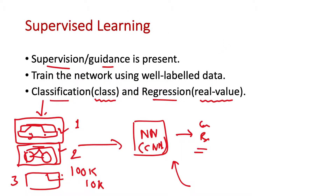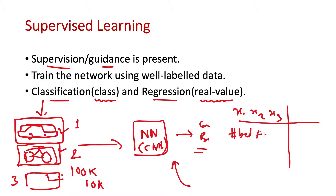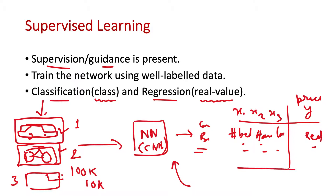In regression, we may provide continuous data such as housing prices, with input factors like number of bedrooms, area of the house, and locality. We provide a collection of such data along with the corresponding price of each house, which is some real number. Training the neural network on this data will allow it to predict the price of a new house when given its number of bedrooms, area, and locality — this is an example of regression, predicting a real-valued output.